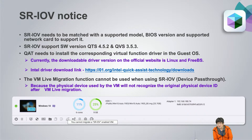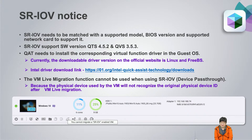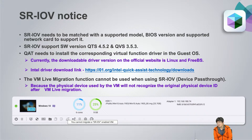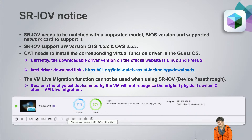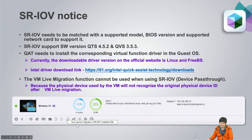Notice: First, QAT requires installing the Virtual Function (VF) driver in the guest OS so it can recognize the QAT card. Currently the downloadable driver only supports Linux and FreeBSD — see the Intel driver download link. Second, the VM live migration function cannot be used when using SR-IOV device pass-through, because if you use live migration, the VM migrates to another NAS and cannot find the PCIe card device ID. We block the live migration icon when SR-IOV is in use.